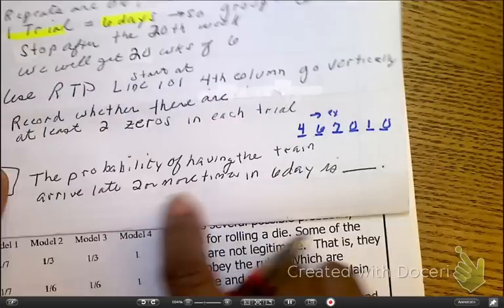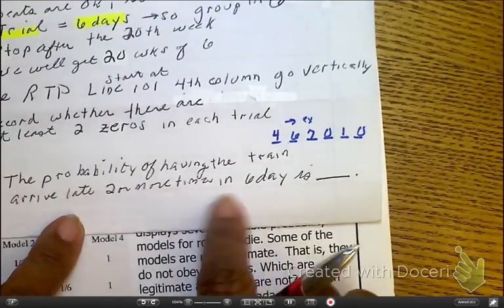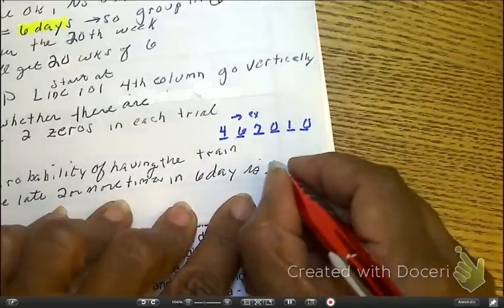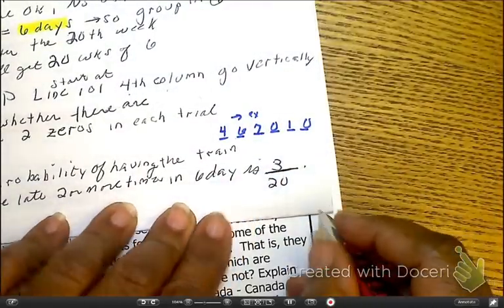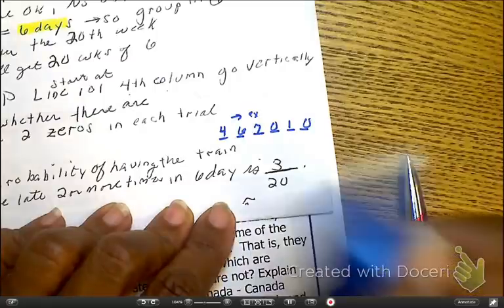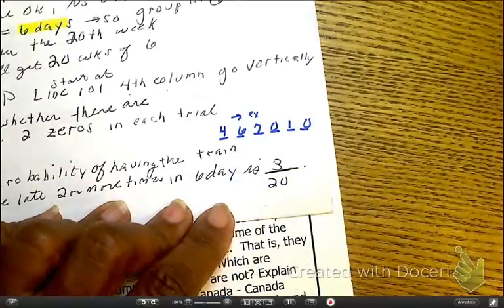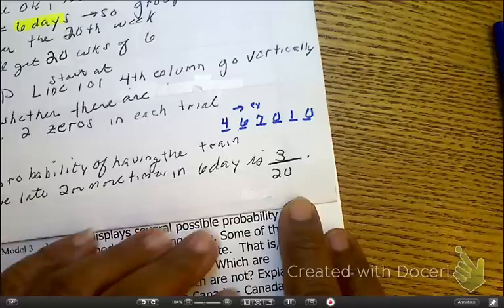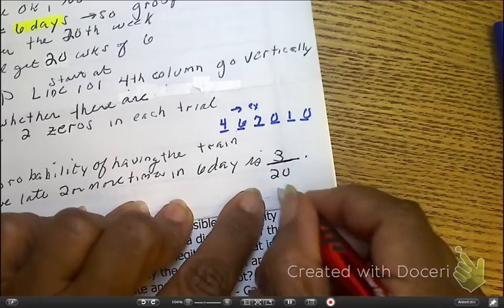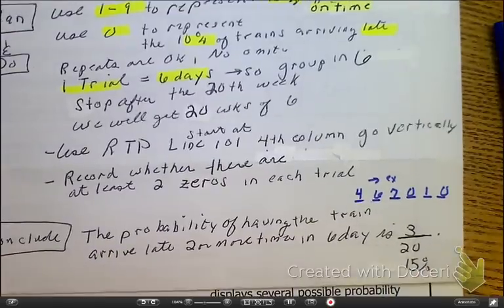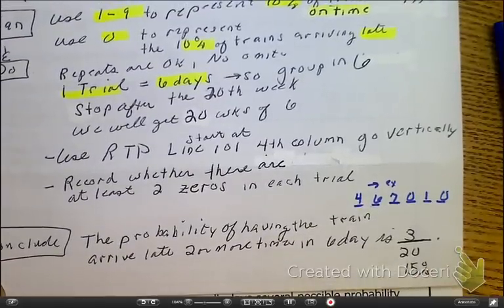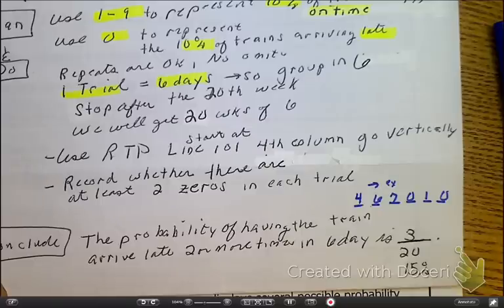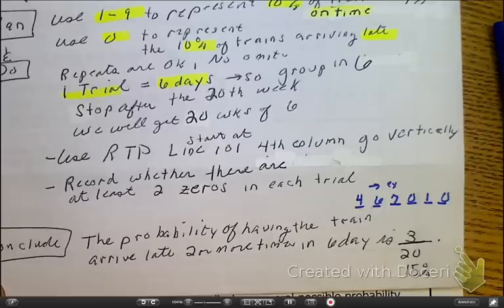So now, as I put this to the side, let's go back to my conclusion for this particular problem. So the probability of the train arriving late two or more times in six days, what did I say it was? Three out of 20, which means that is going to be actually fifteen percent. So this, guys, is how you do simulations. I want you guys to do problem number 29 by yourself. And we're going to find one more that we're going to be doing tomorrow. Have a great evening. Peace out.